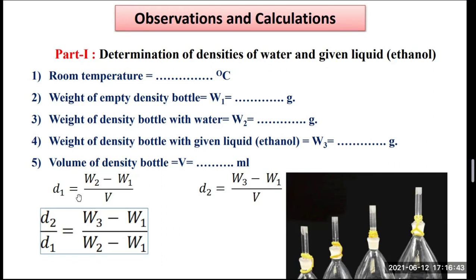The density formula: weight divided by volume. Weight of water = w2 − w1. Density of water d1 = (w2 − w1) / volume of the gravity bottle. Density of the other liquid d2 = (w3 − w1) / volume. Therefore the ratio d2 / d1 = (w3 − w1) / (w2 − w1), since volume cancels out.